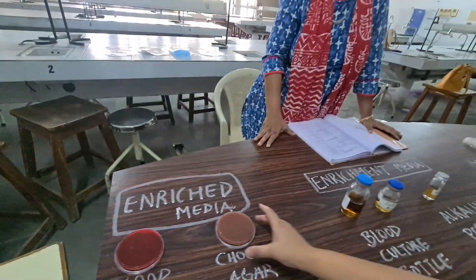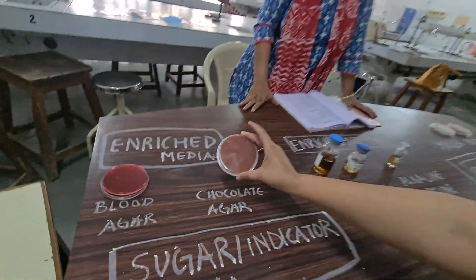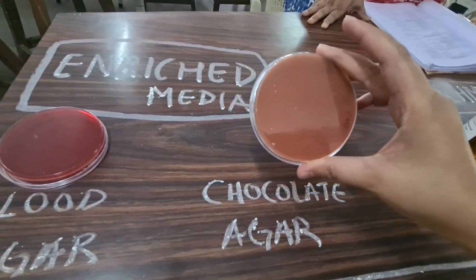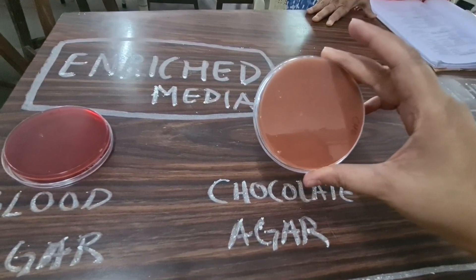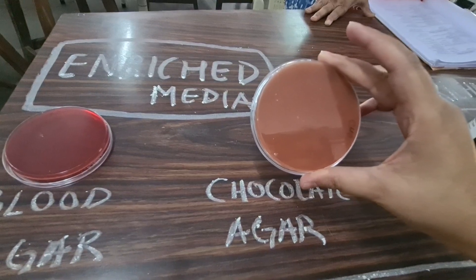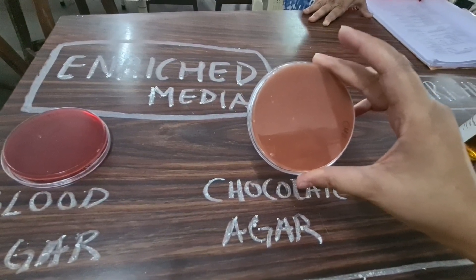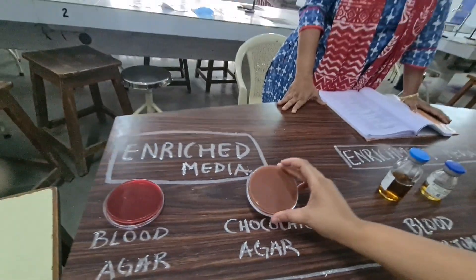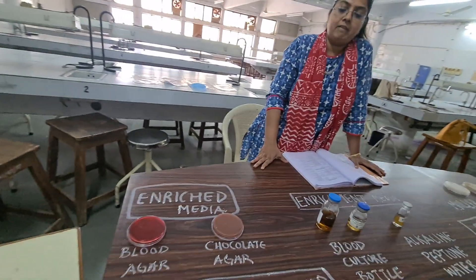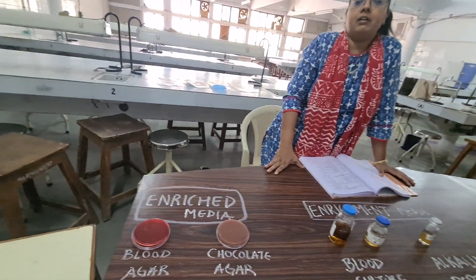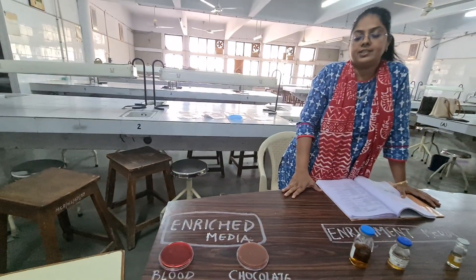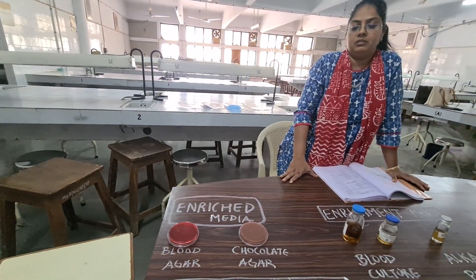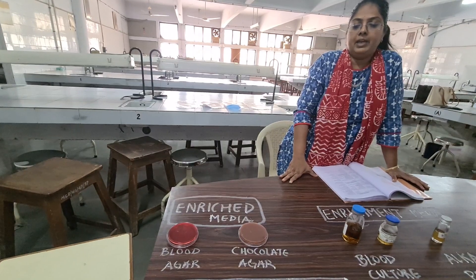Next is the chocolate agar plate. Here, blood agar is incubated at 56 degrees centigrade so the RBCs are lysed and the colour becomes like chocolate — so it is called chocolate agar. It is used for fastidious organisms like Streptococcus, Gonococcus, and Meningococcus.